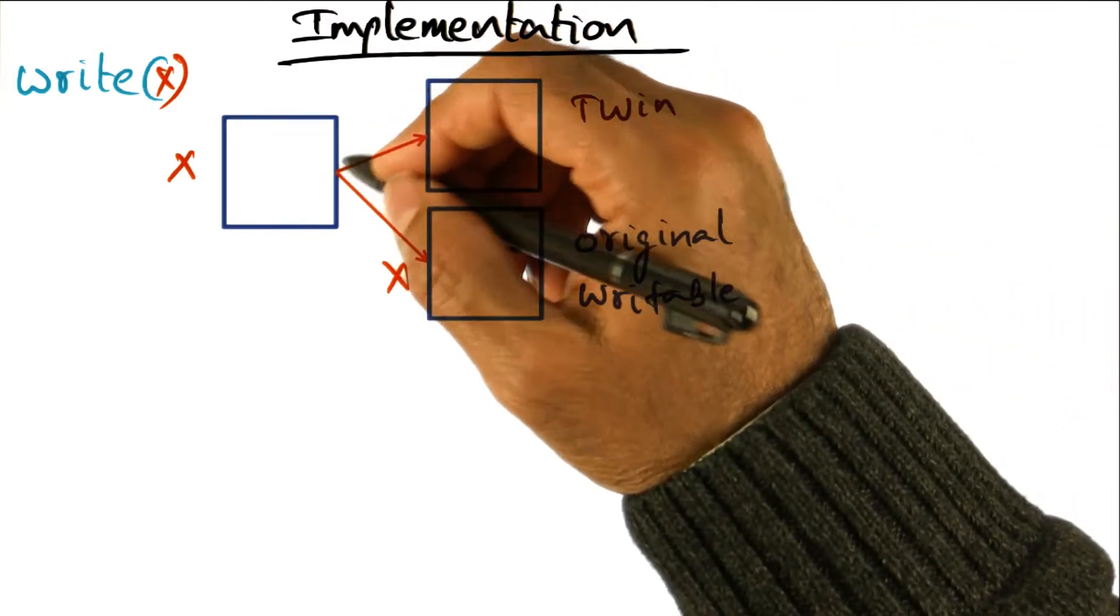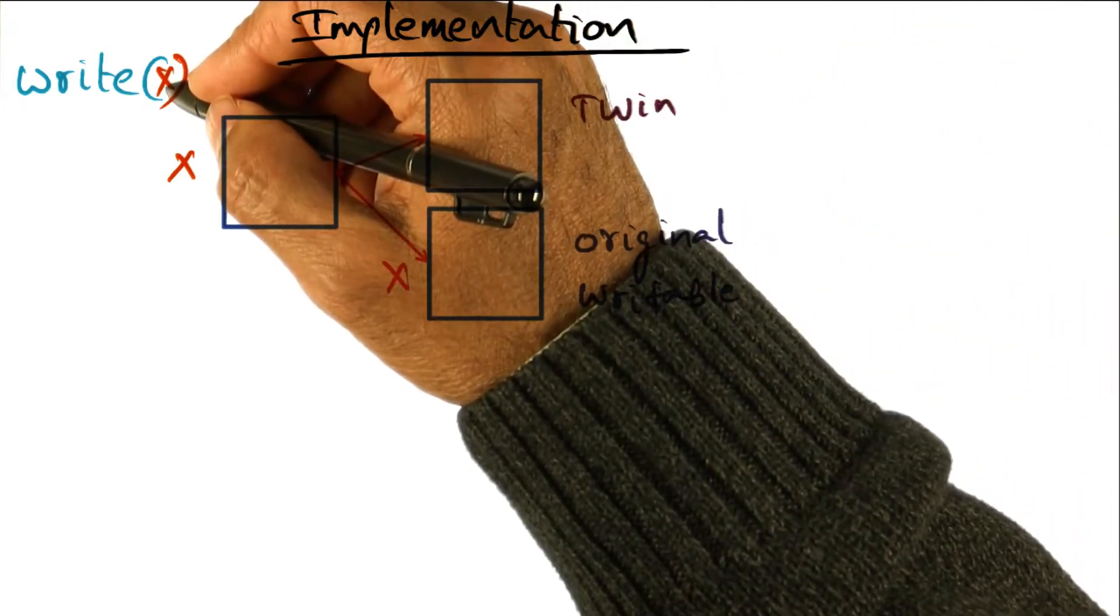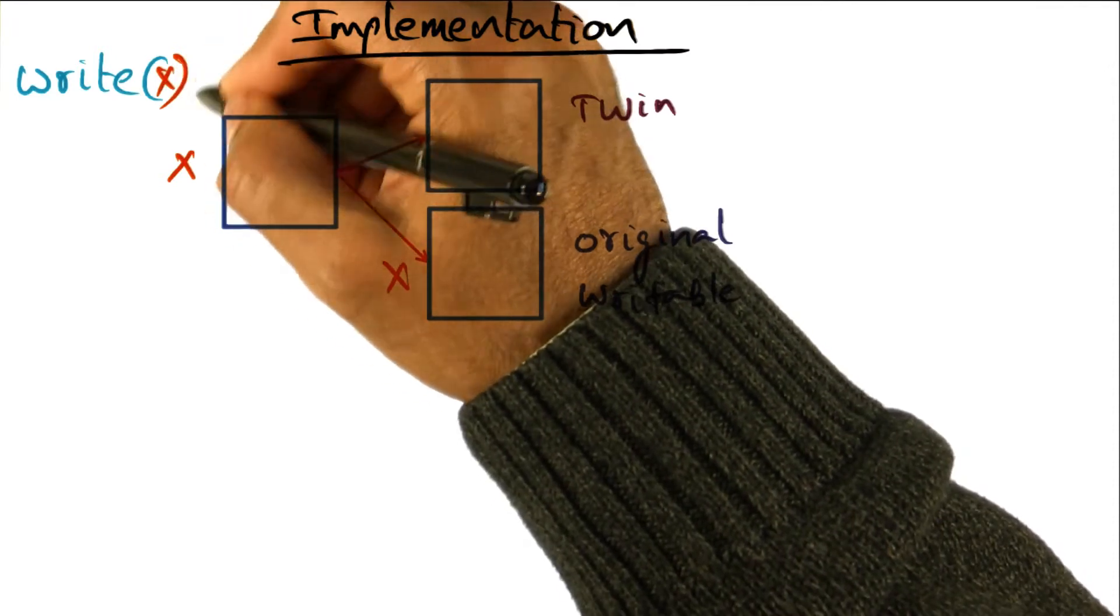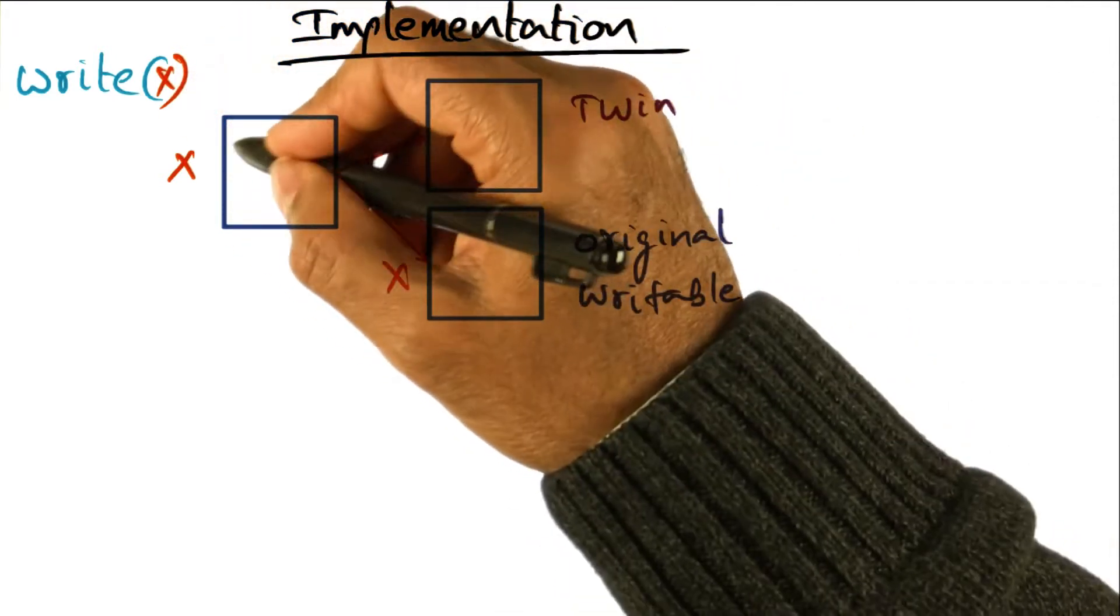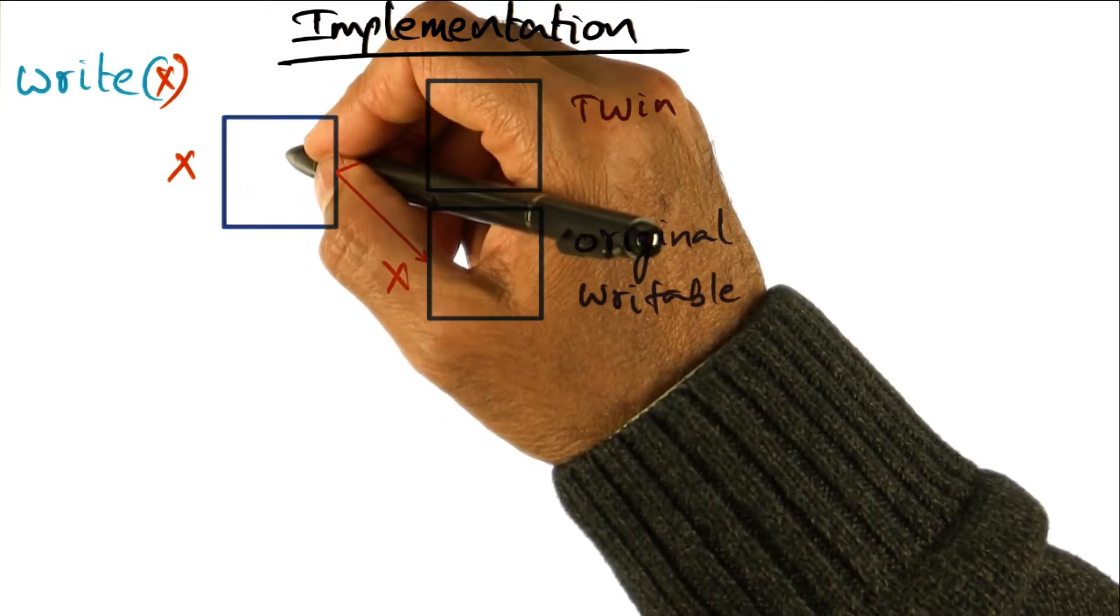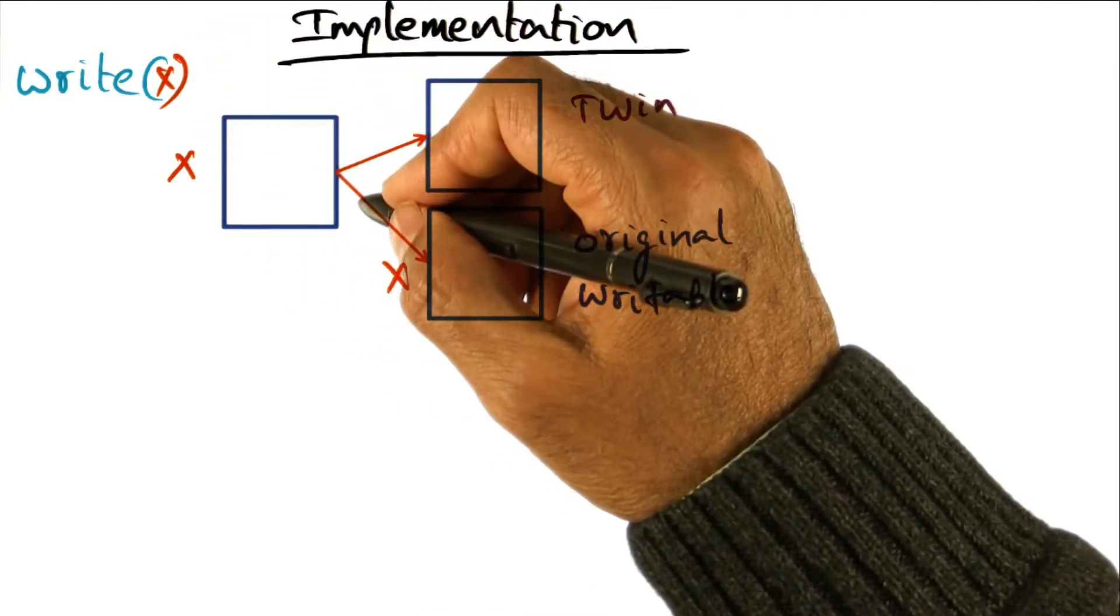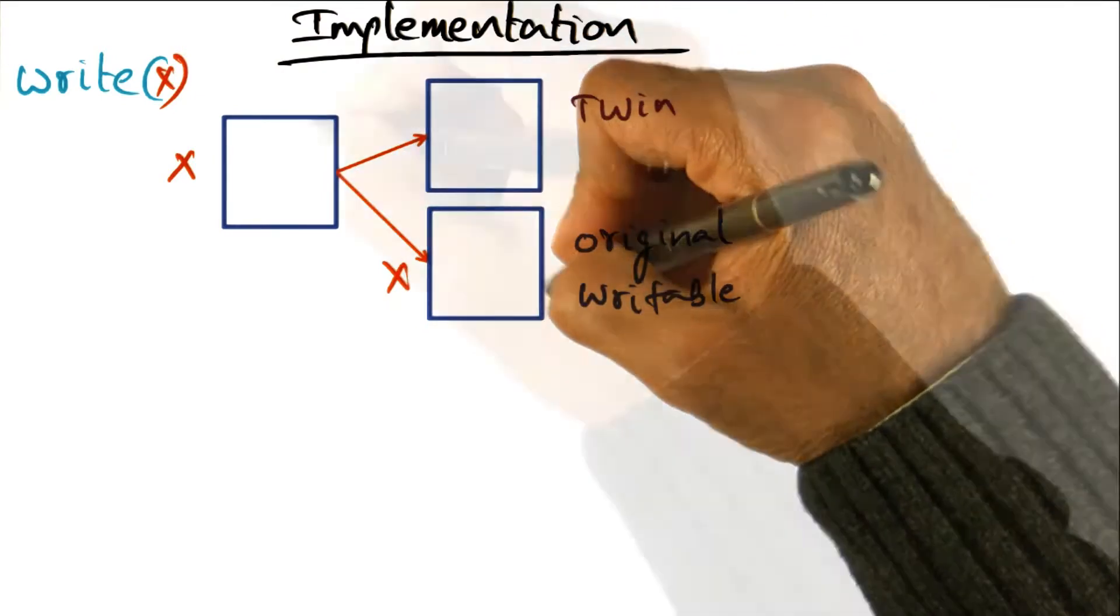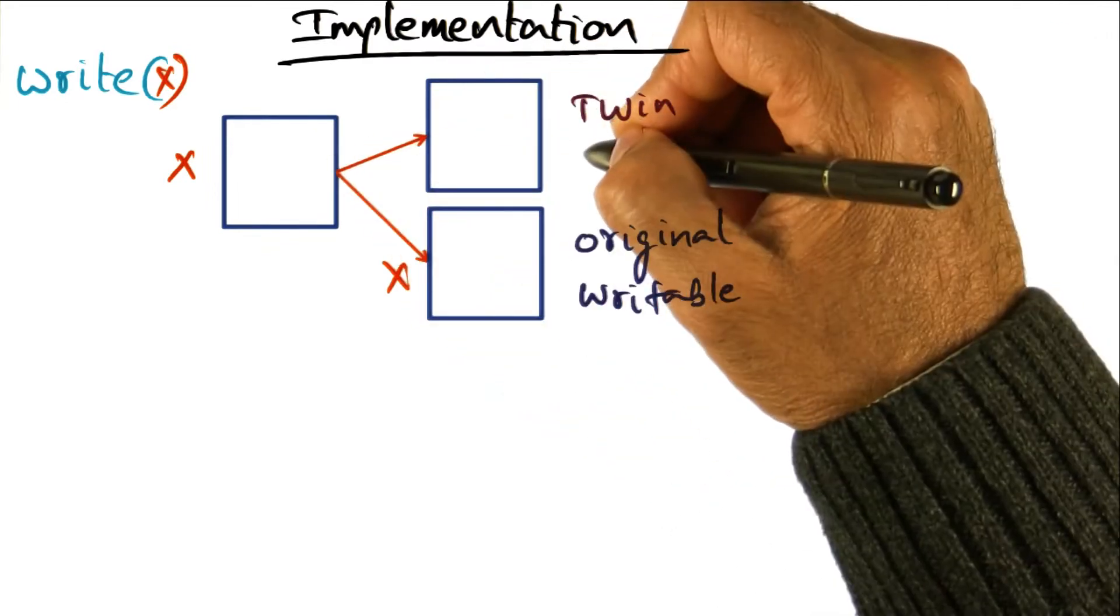So what's going to happen is that when a process or a thread on a processor tries to write to a page x, at the point of writing to that page x, the operating system is going to say, ah, this guy wants to write to this x. I'm going to make a twin for this page. So there's the original page and there's a twin for the same page.